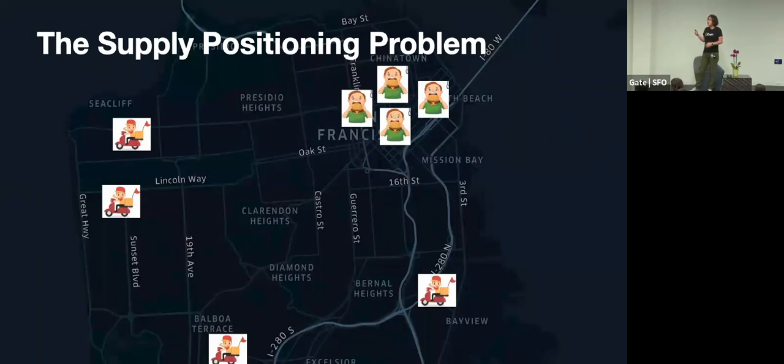So because of all these maps data, it results in a lot of interesting but challenging problems. So one of those problems is the supply positioning problem. So let's look at this very simple example. Assume now it's 5 p.m. at night and we have four hungry eaters that are trying to order. And they're like, I want this burger really bad.